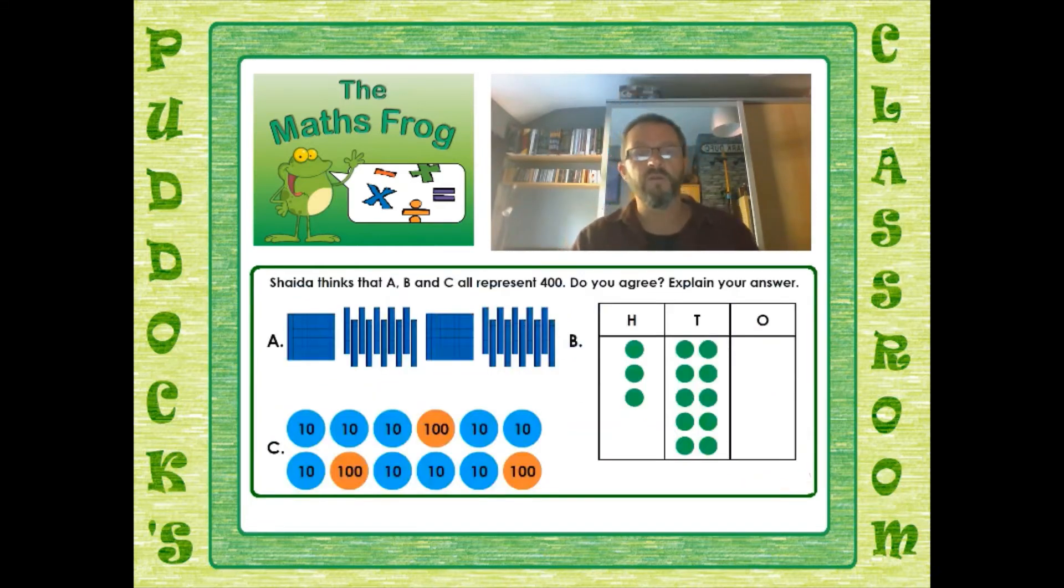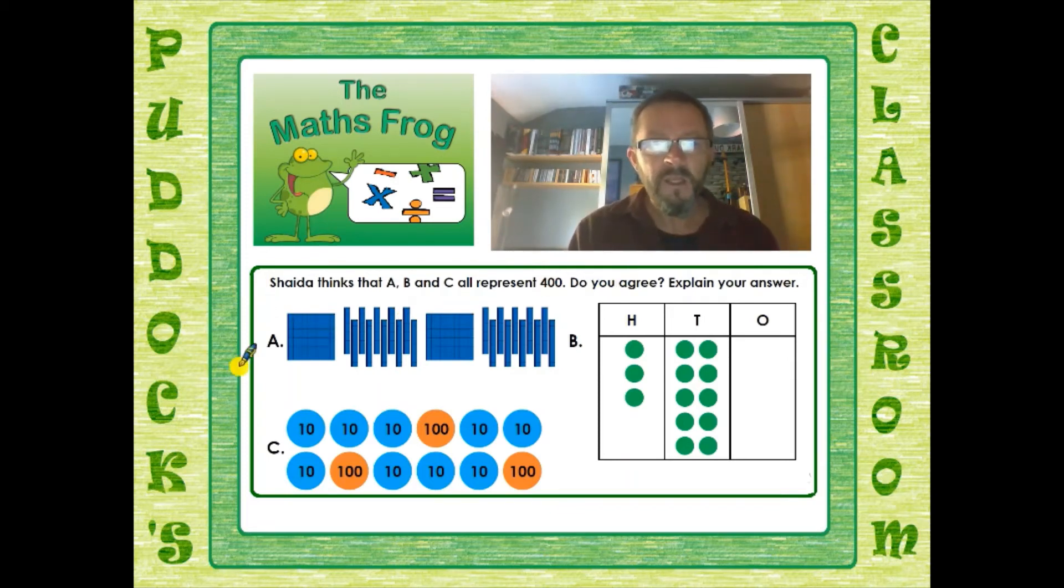The final type of question you've got is where you look at a problem and explain whether you agree with it or not. Now the one I've got here is a little bit hard. It's harder than the one on your worksheet, so if you can understand this one you'll be able to do the one on the other sheet really easily. We have a person called Shida and Shida thinks that A, B and C all represent 400. Do you agree? Explain your answer. You'll explain your answer to the adult that's working with you.